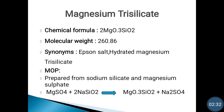The chemical formula for magnesium trisilicate is 2MgO·3SiO2. Its molecular weight is 268.86. Synonyms — other names for magnesium trisilicate — are Ipsone salt or hydrated magnesium trisilicate.